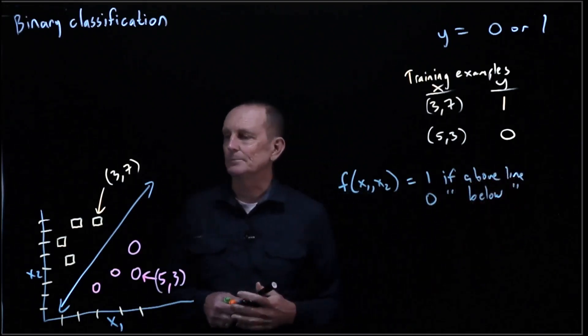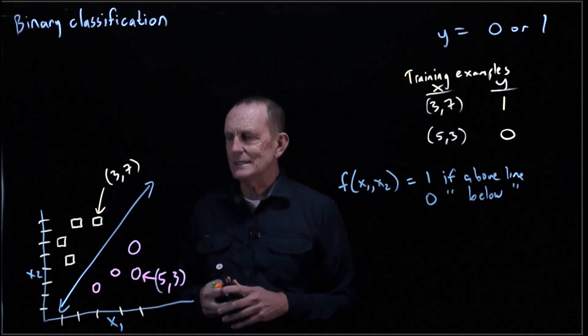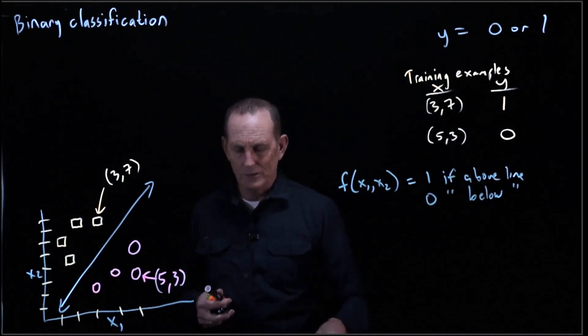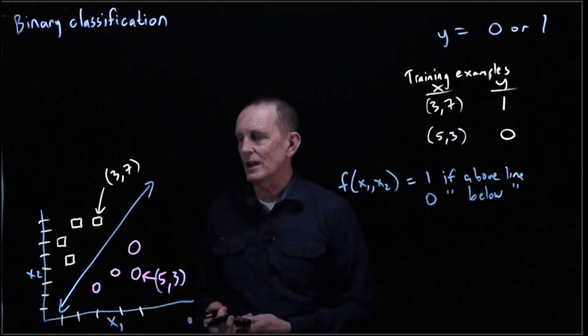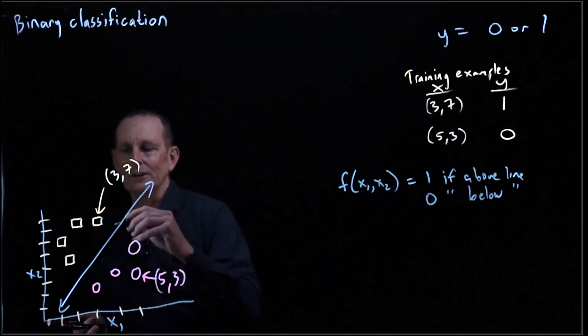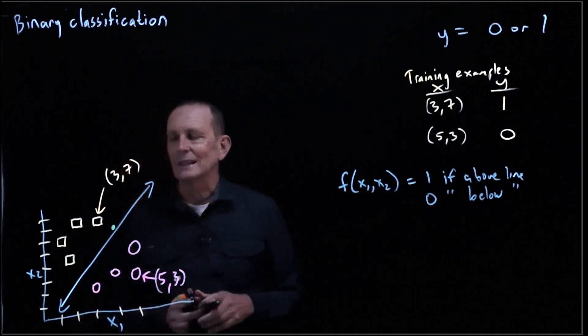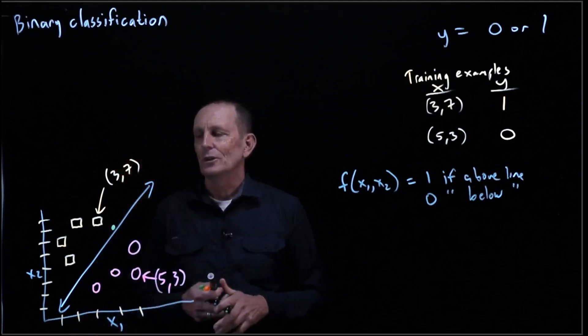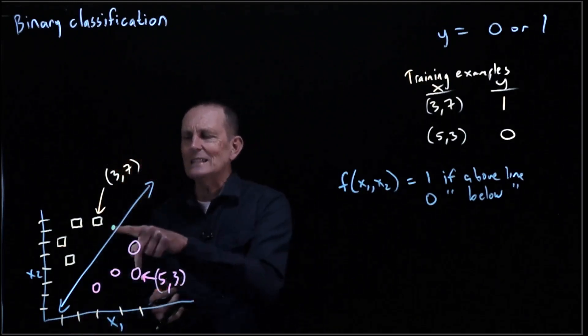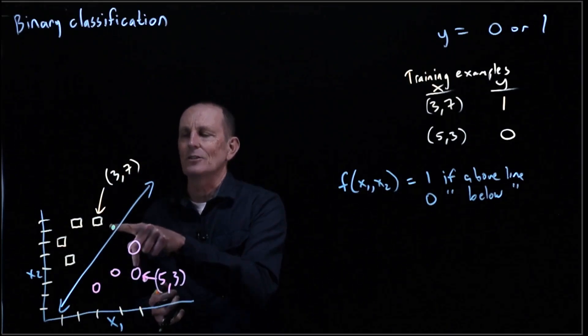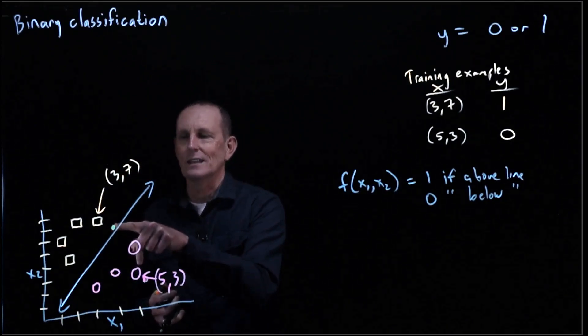Here's the problem with that. The problem with that is let's say we got a new value coming in. So let's say we've got a point here. We would like to realize we're less confident that this is a square if it's right next to the line, right above the line,